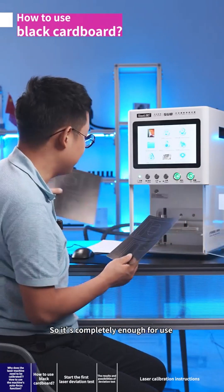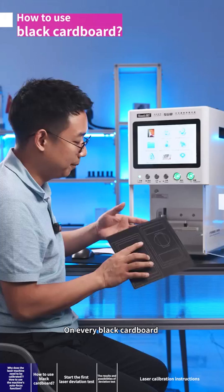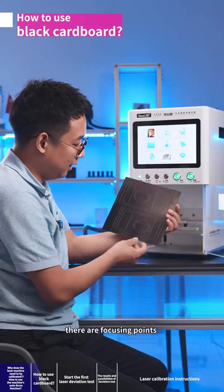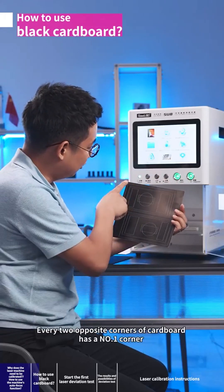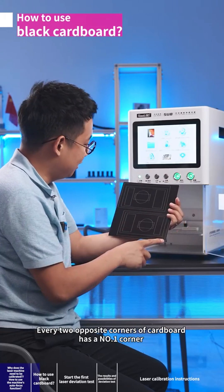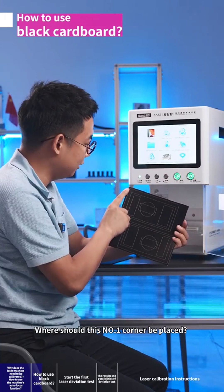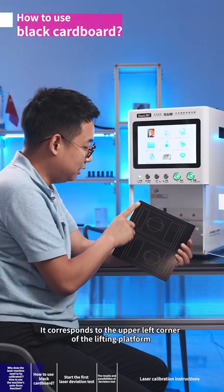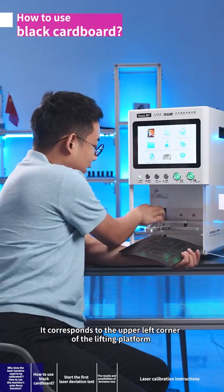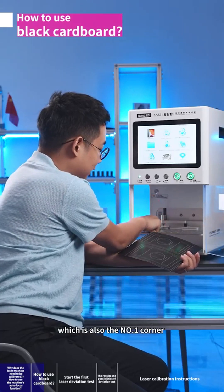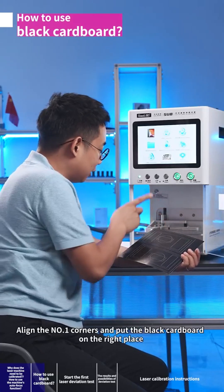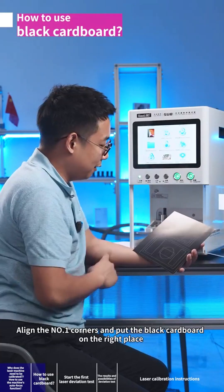It's completely enough for use. On every black cardboard there are focusing points. Every two opposite corners of cardboard has a number one corner with a small arrow mark. This number one corner corresponds to the upper left corner of the lifting platform. Align the number one corners.